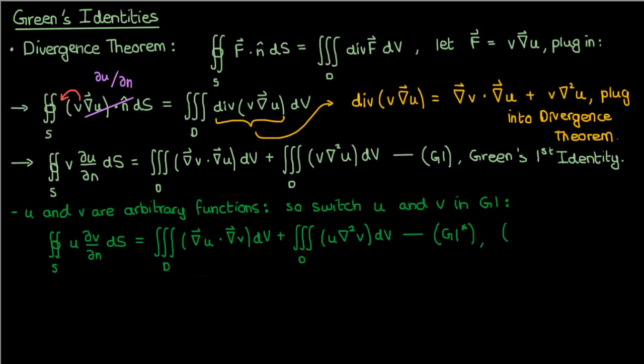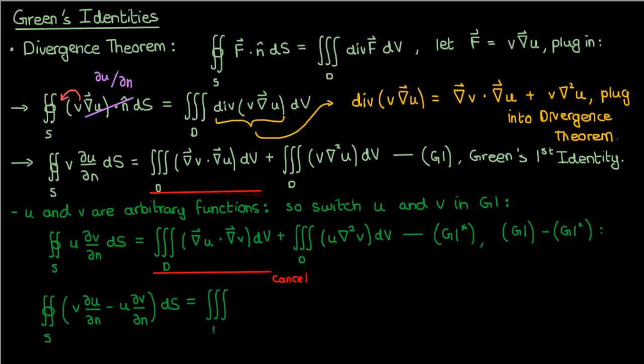Now, what I'm going to do is subtract equation g1 and equation g1 star. These first triple integral terms on the right cancel, and we'll end up with the double integral over s of v partial u partial n minus u partial v partial n ds equals the triple integral over d of v Laplacian u minus u Laplacian v dv. This equation is called Green's second identity, and I'm going to label it as g2.